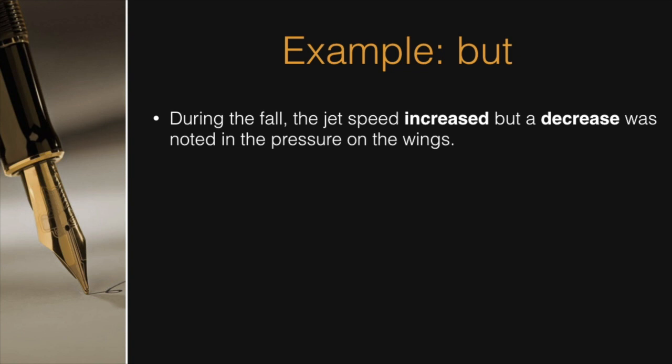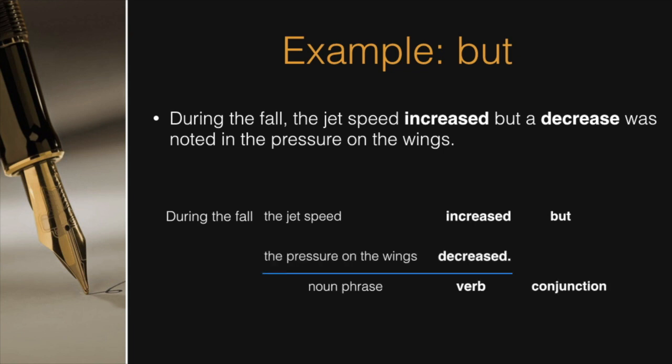If you wish now, you can pause the video here, and rewrite the sentence in a parallel form. However, here it is. During the fall, the jet speed increased, but the pressure on the wings decreased. In this parallel form, the author's intent is now clear, which is that both these changes occurred during the fall.